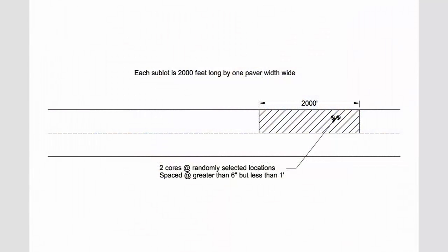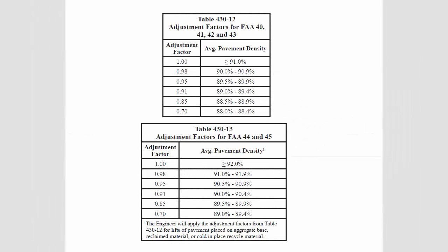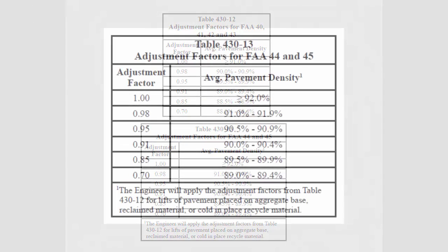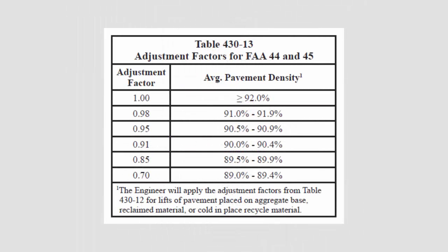The number of cores needed is based on a unit of measurement called a sublot. A sublot is defined as a single lift, one paver width wide and 2000 feet long. Two cores are cut from each sublot. A lot is defined as the entire day's paving. The averages of all sets of cores within the sublots are combined and then averaged, and that final value is compared to the specification requirements for that project.